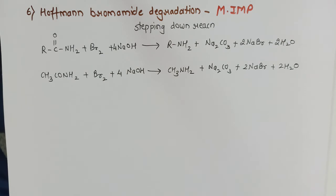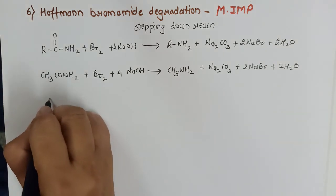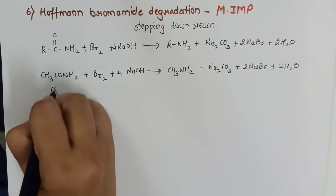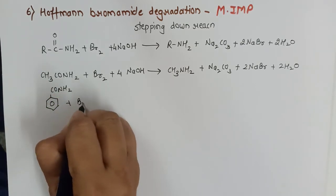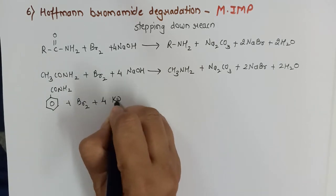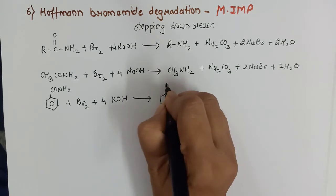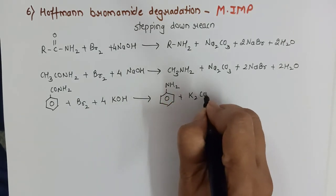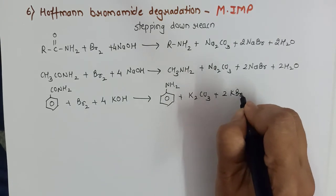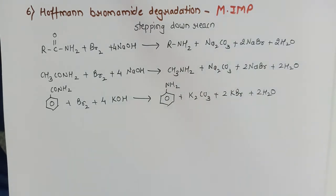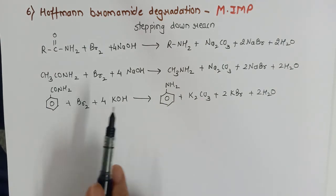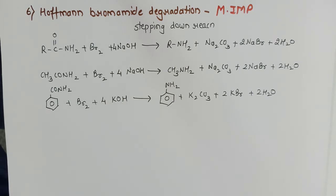This reaction can also be used for preparation of aromatic amines. Benzamide treated with bromine and potassium hydroxide gives aniline along with potassium carbonate, potassium bromide, and water. Remember: if a reaction involves one amide, one bromine, and an alkali, it is by default Hoffman bromamide degradation. These were all the preparation methods for amines.